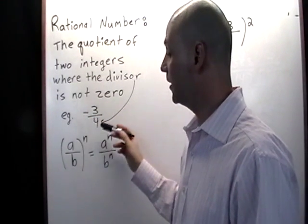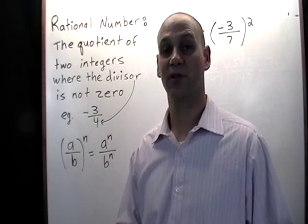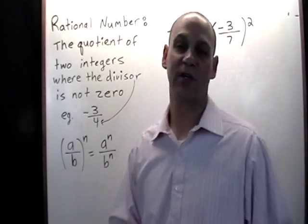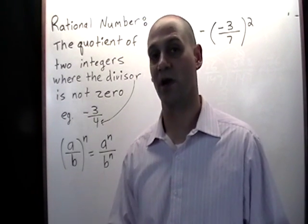So for example negative 3 over 4 would be considered a rational number. The divisor in this case would be 4 and that number cannot be equal to zero in order for it to be a rational number.